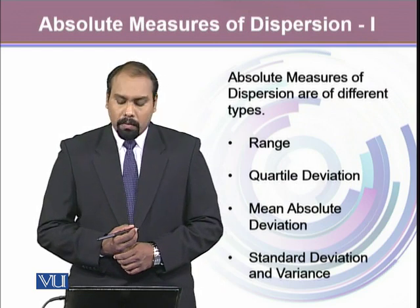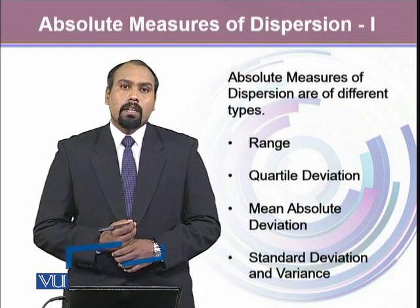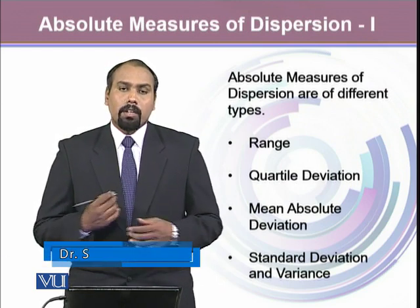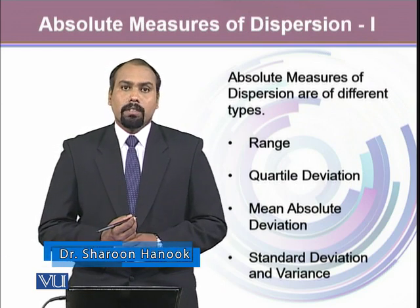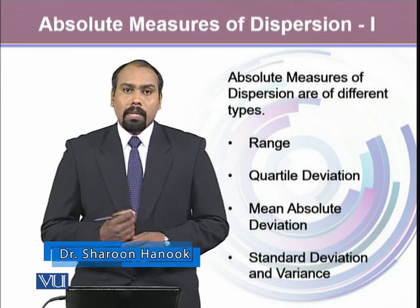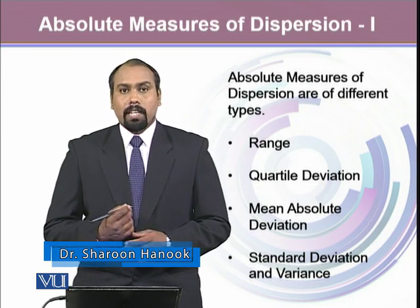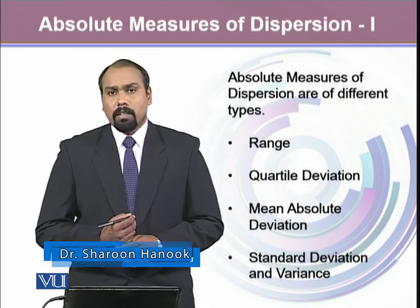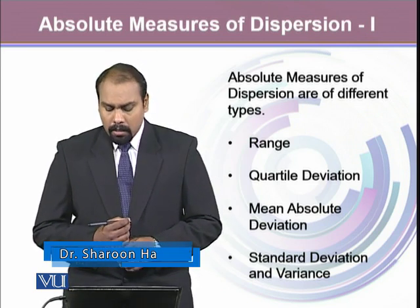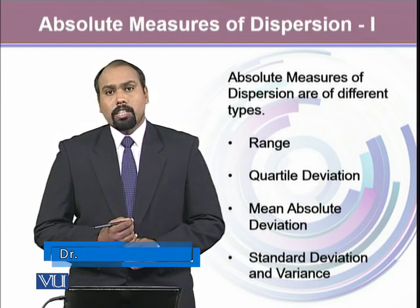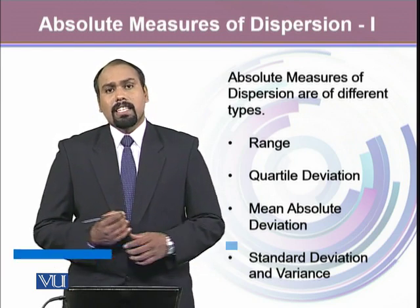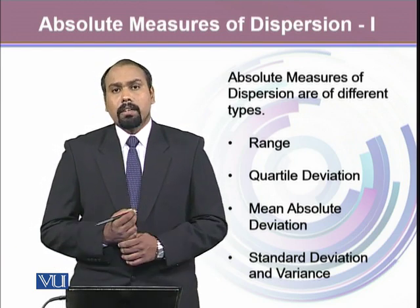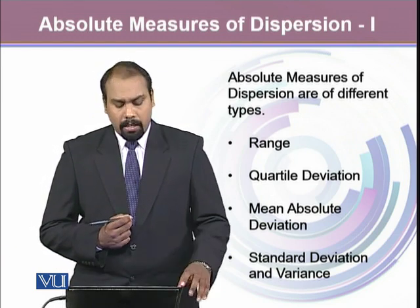Absolute measures of dispersion are of different types. That could be range, quartile deviation, mean deviation (also called mean absolute deviation), and standard deviation. It has another variation called variance.